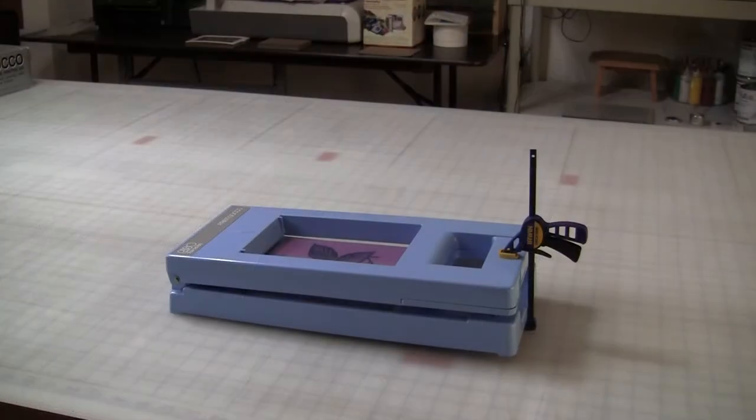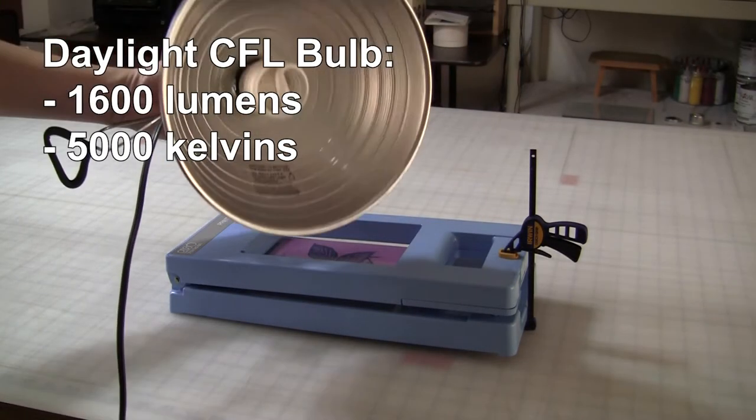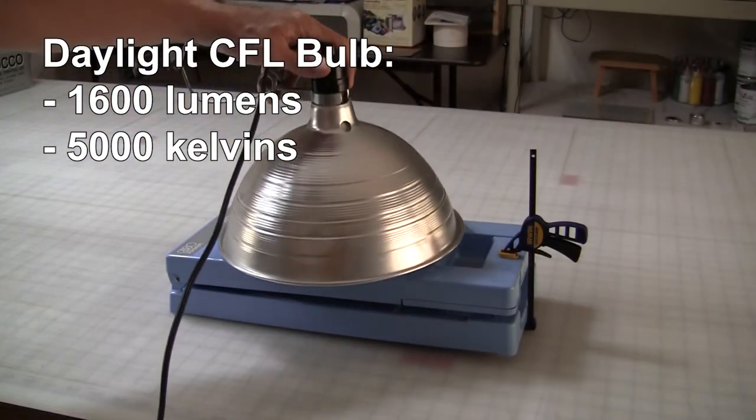Now for artificial light. I'm using a 10-inch clamp light with a daylight bulb. Be sure the reflector covers the entire Print GoCo window.